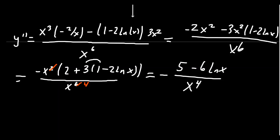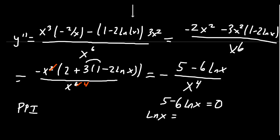For potential points of inflection: the denominator goes to zero at x = 0, which is outside the domain. The numerator equals zero when -5 + 6·ln(x) = 0, giving ln(x) = 5/6, so x = e^(5/6) ≈ 2.3. This is a potential point of inflection — we don't know it's confirmed yet.